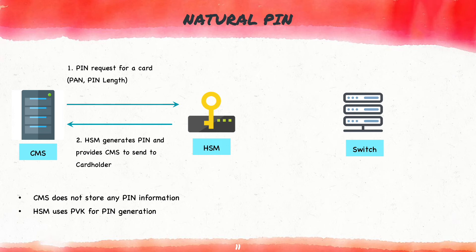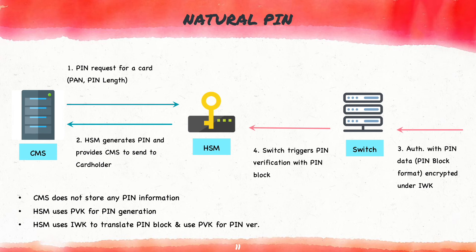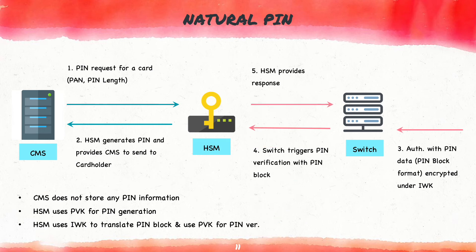Now let's look at how the PIN number gets validated during an authorization. When the authorization is received by the switch, the switch receives the PIN block from the scheme encrypted in the IWK. The switch triggers a PIN verification request to the HSM using the IWK and the PIN key with which the actual PIN was generated. The HSM validates the PIN block received against the PIN number that should have been entered by the customer, and returns the result to the switch. In the case of a natural PIN, the CMS system does not store the PIN block or PIN offset — the IWK is used to extract the PIN block, and then the PIN verification key is used by the HSM to validate it.